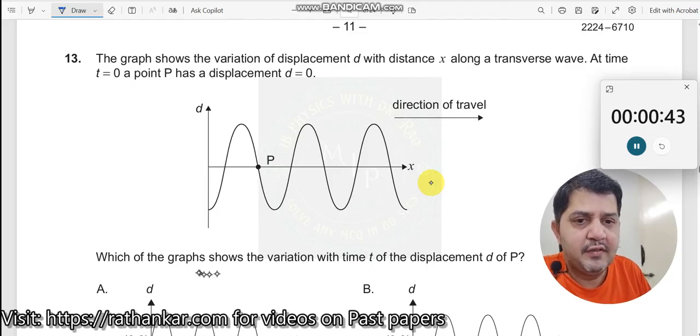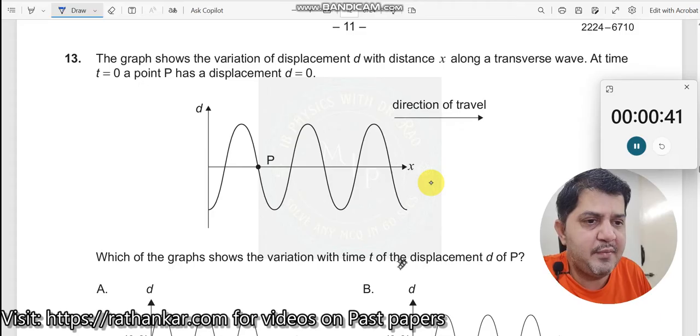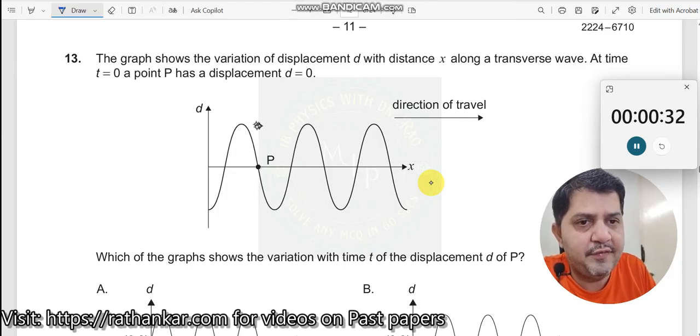Which of the graphs shows the variation with time t of the displacement d of P? So as time proceeds, what will happen to P? That is the question. What we do is, P is a point on the wave, right? So first let us draw the wave after some time. What happens to this wave? The wave will look like this because it's a progressive wave.